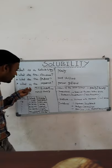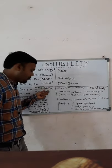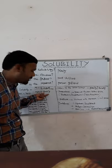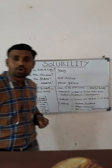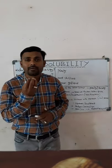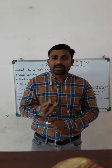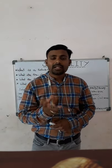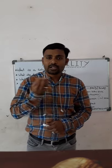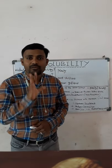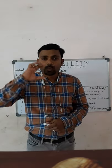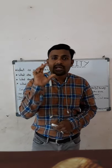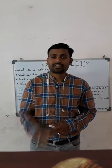Solubility is expressed as the mass of solute in grams per 100 grams of solvent. For example, if you have taken 10 grams of sodium chloride in water, that is a 10% sodium chloride solution. If you add more quantity and the solution becomes saturated, suppose 15 grams is required — that 15% is called the solubility of sodium chloride at that concentration.